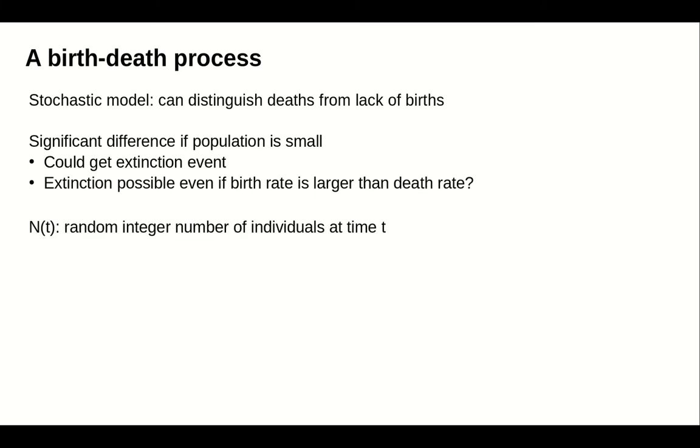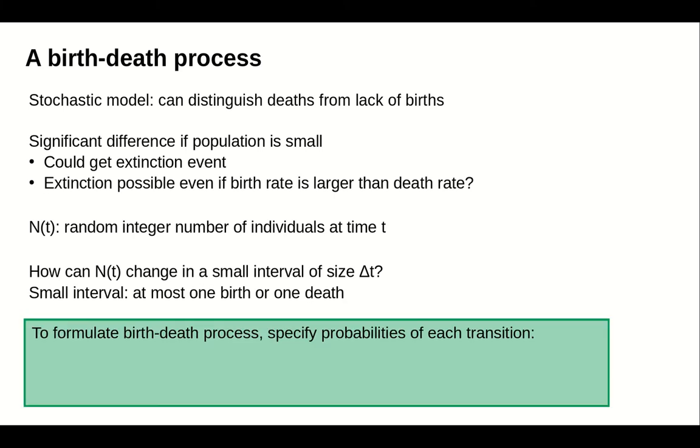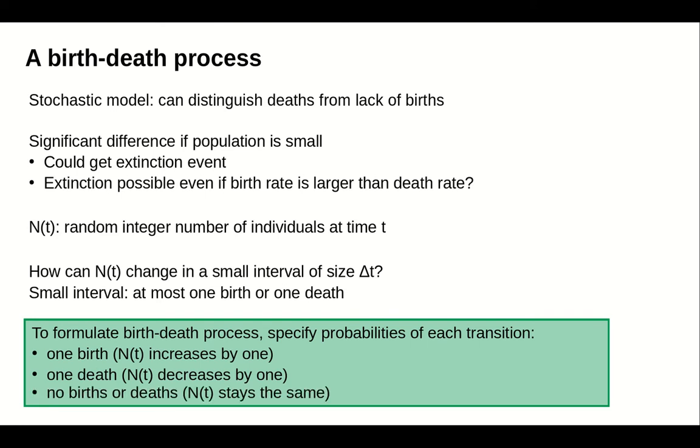A stochastic model that captures these births and deaths is called a birth-death process. We let capital N(t) denote the random number of individuals in time t. We look at how N(t) could change during a small interval of time of length delta t. We assume that the interval of time is sufficiently short, so that we could have, at most, one birth or one death in that interval. We need to specify three probabilities: the probability of one birth, the probability of one death, and the probability that we had no births or deaths in the interval.